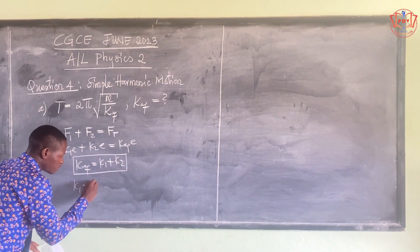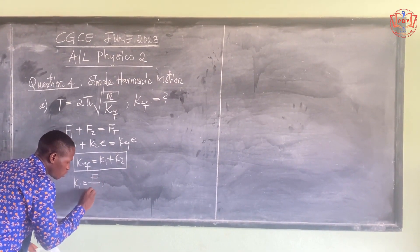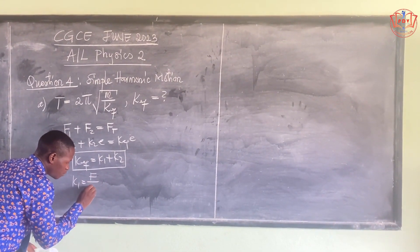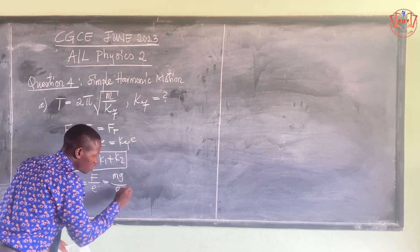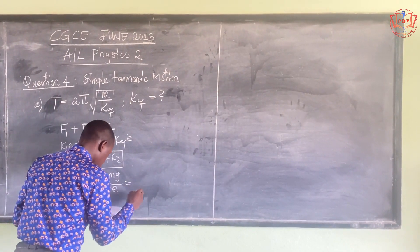Simplifying that, we have the mass 0.8, g is 9.8, and the extension is 5.2 × 10^-2 in meters.